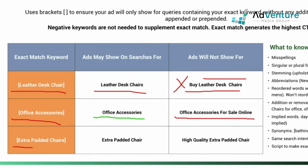Another example: 'extra pad of chairs' — 'extra pad of chair' without the S can show for plurals and slight misspellings, as we'll discuss. However, 'high quality extra pad of chair' is a search term that will not show, even though it's probably a good search to bid on. This is one of the downsides of exact match — you get the most specific traffic and the most control, but you won't be able to discover any new ideas.